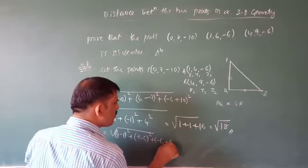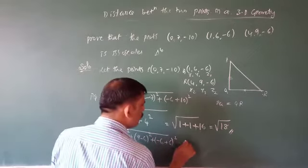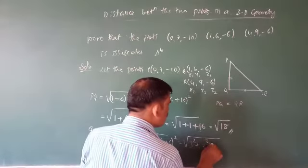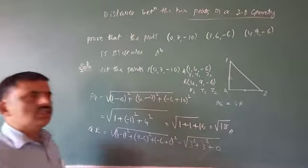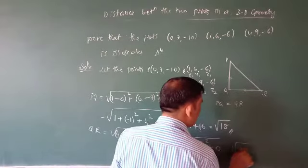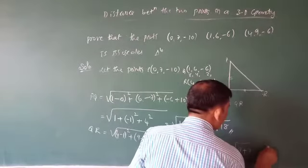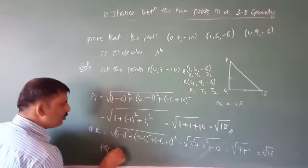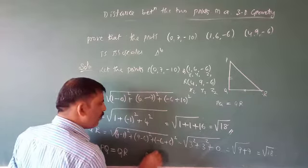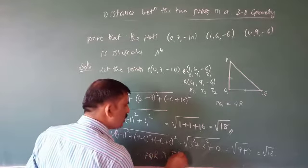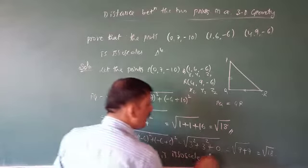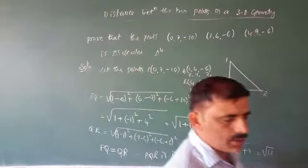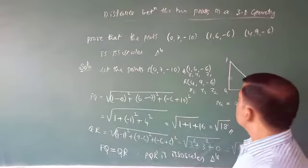QR = √((4−1)² + (9−6)² + (−6−(−6))²) = √(3² + 3² + 0²) = √(9 + 9) = √18. Since PQ = QR = √18, therefore triangle PQR is an isosceles triangle. Any two sides are equal, so it is an isosceles triangle.